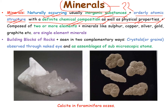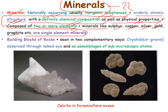Being composed of two or more elements is one requirement for a mineral. However, minerals like sulfur, copper, silver, gold, and graphite are single element minerals — meaning there are both single element minerals as well as two or more element minerals.